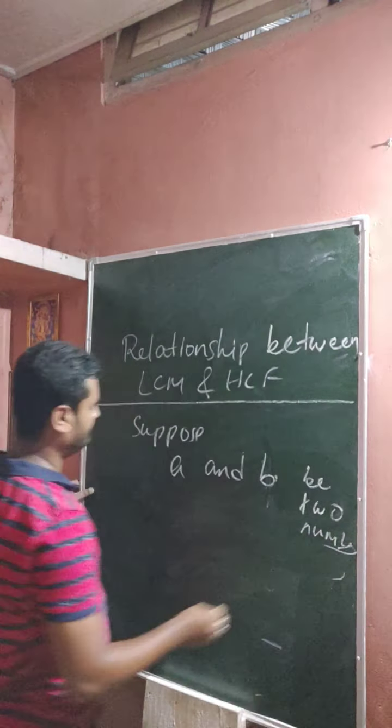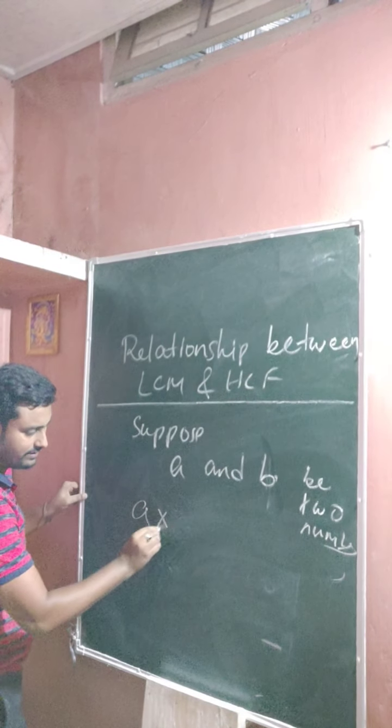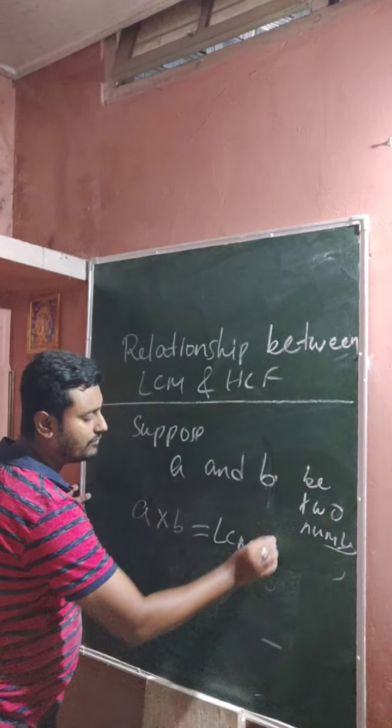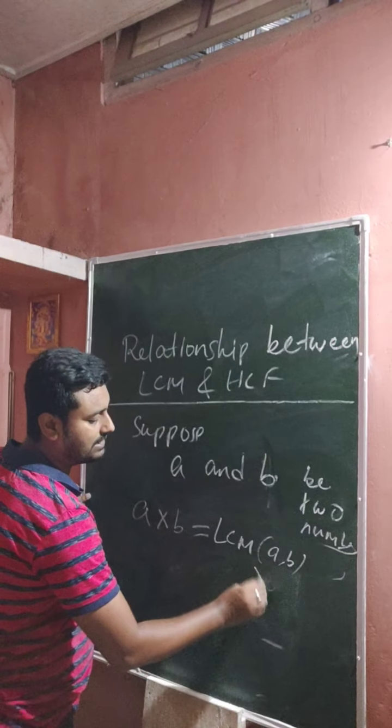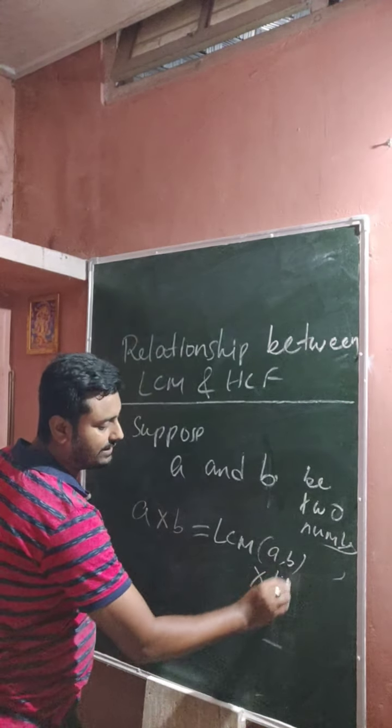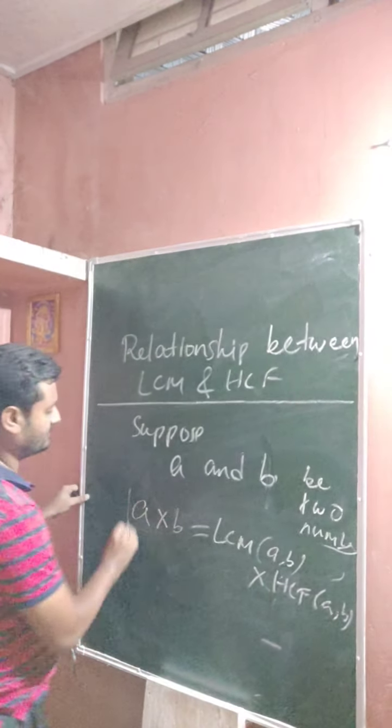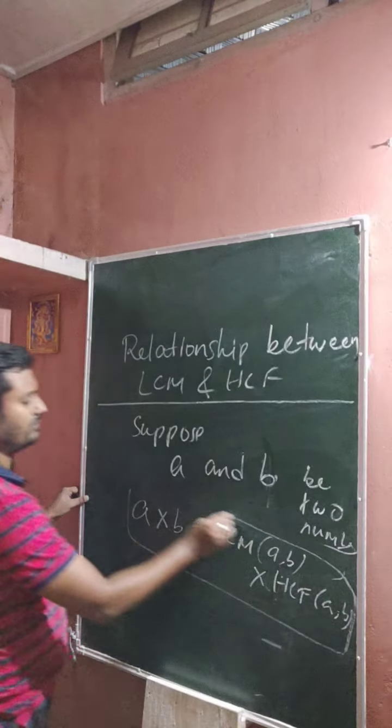Then the relationship is: the multiplication of that two numbers, A into B, is equal to LCM of A and B and multiplication of HCF of A and B. Yeah, this is the formula. Already all of you solved in class 5.